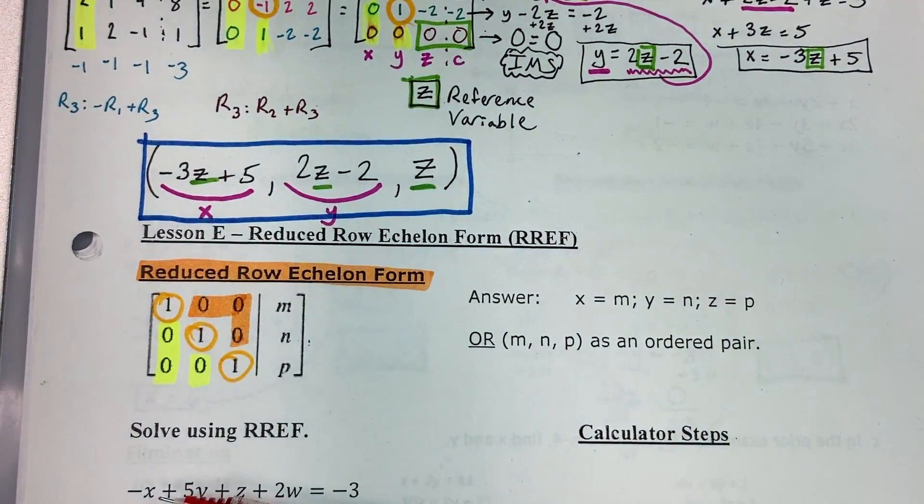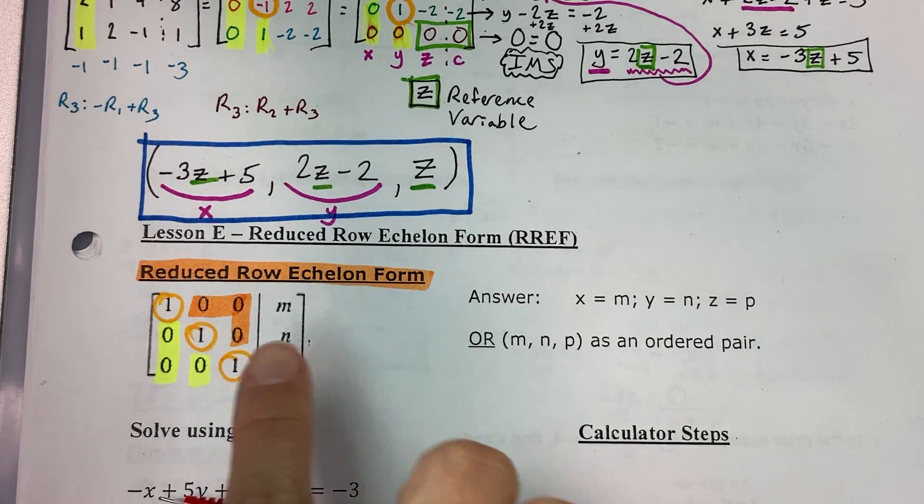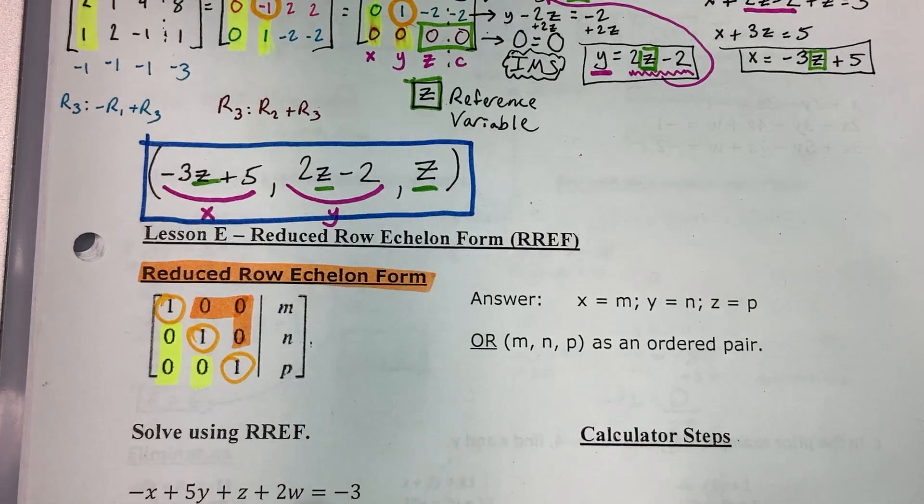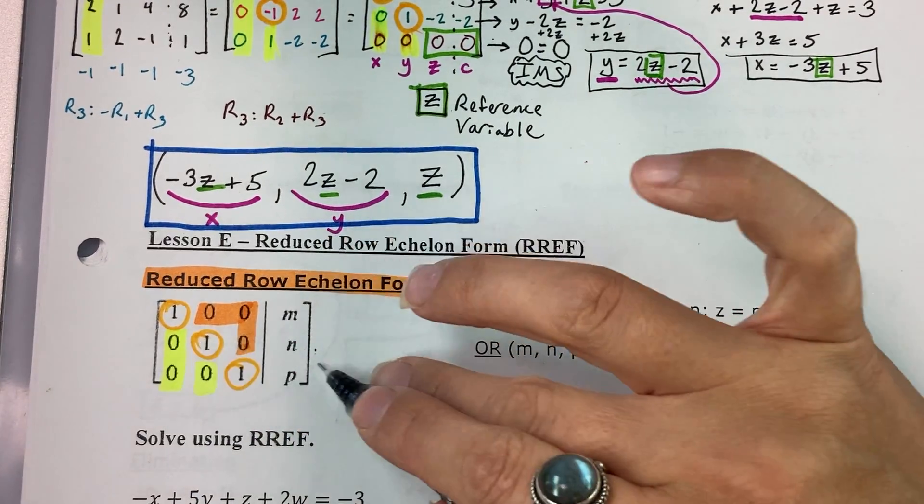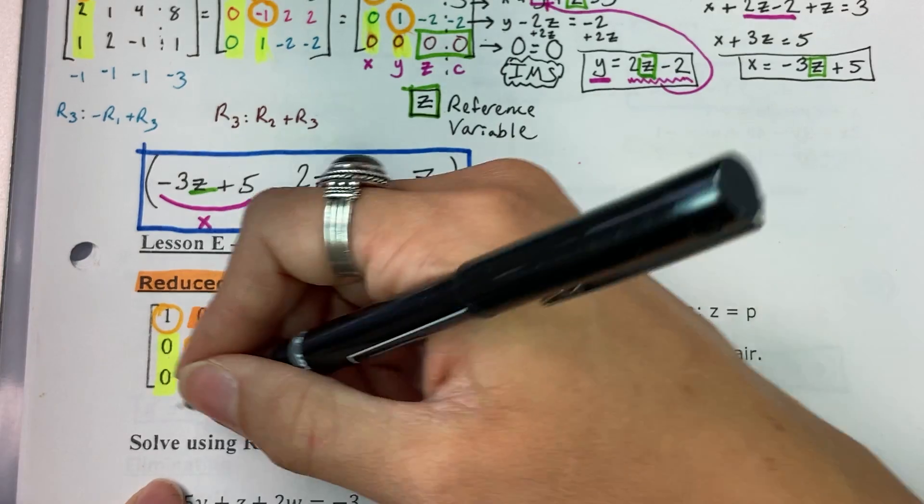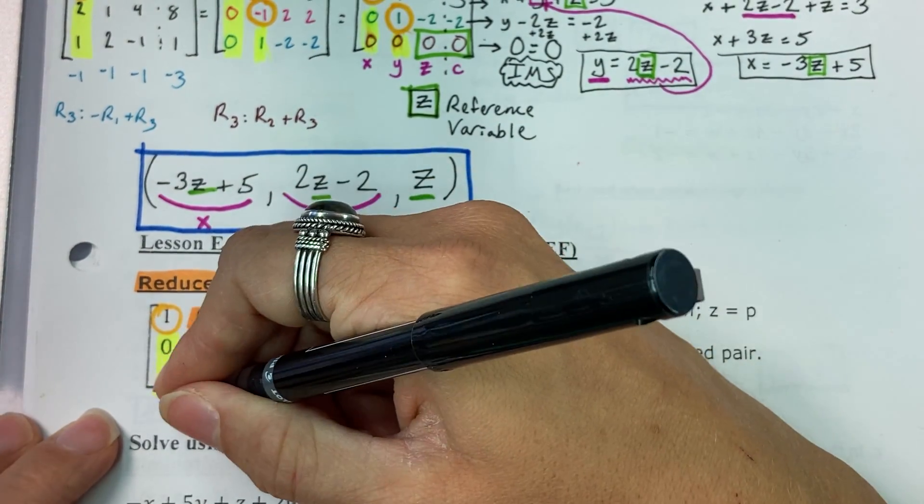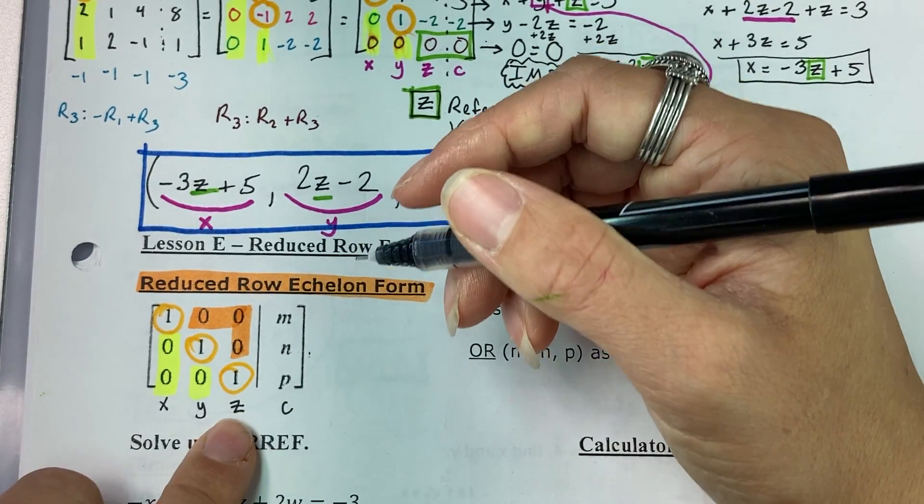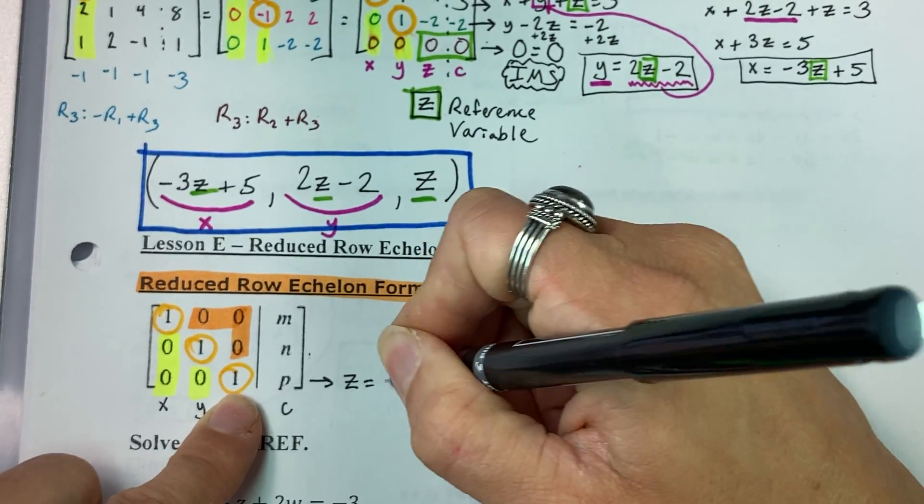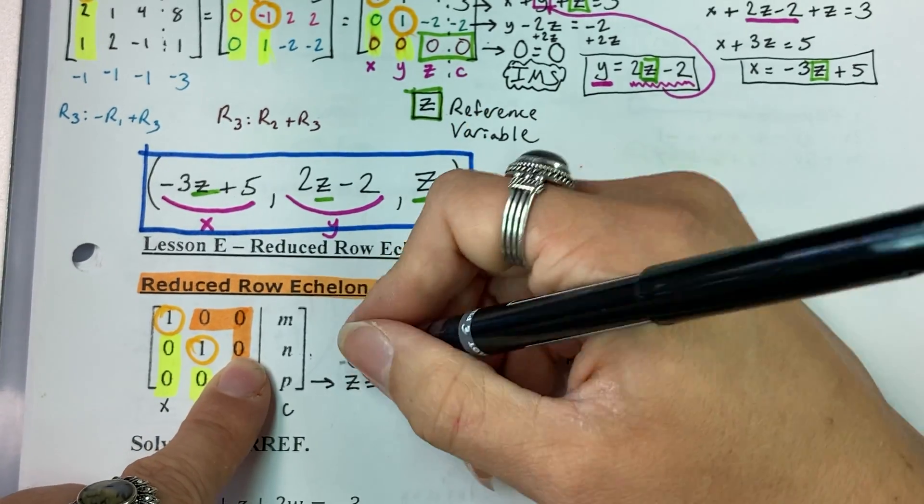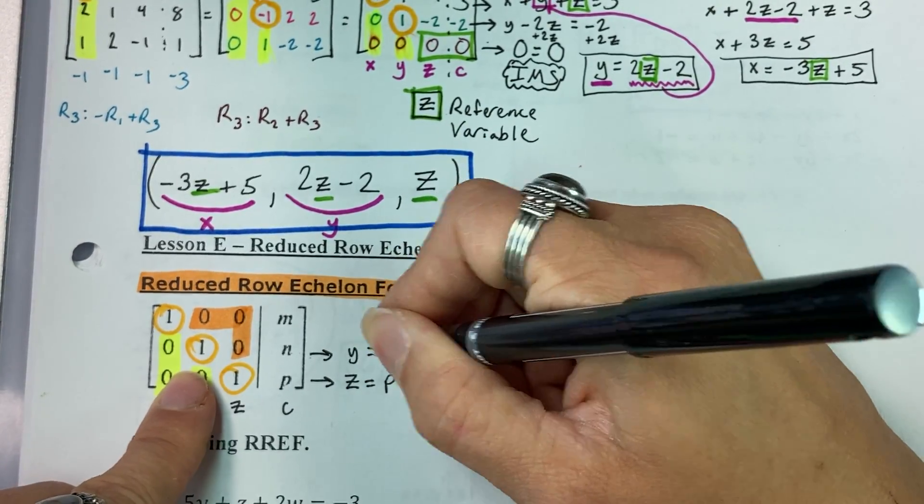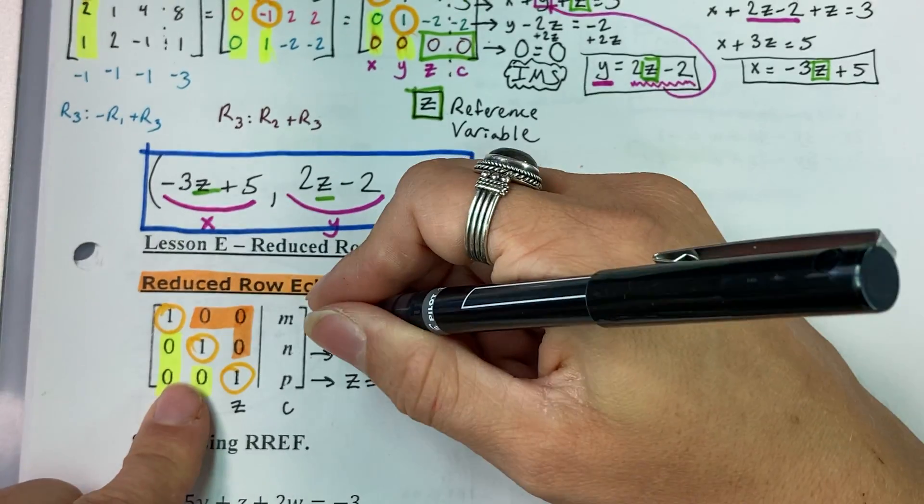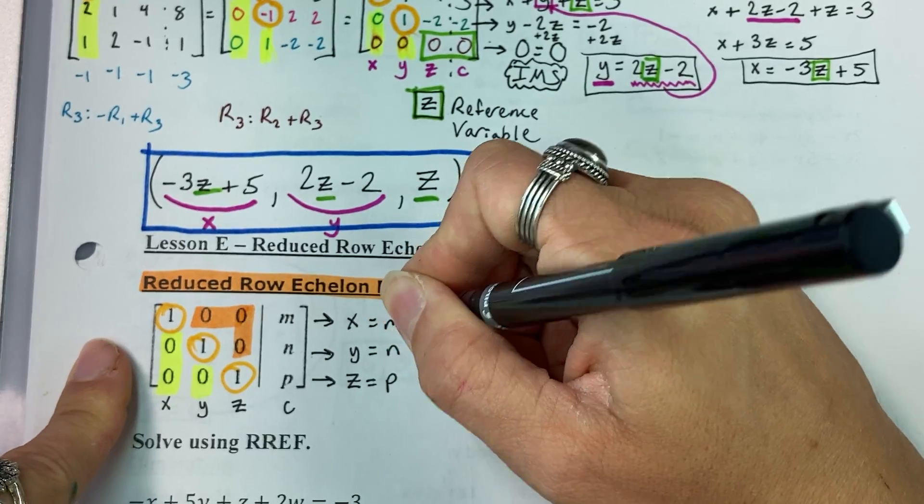Having those zeros above means that instead of having a one variable, two variable, and three variable set of equations, we have a one variable equation in each row. So if these are my columns, this would be my X column, my Y column, my Z column, and the constant column. This first one would say Z equals P, the next one would say Y equals N, and this top one would say X equals M.